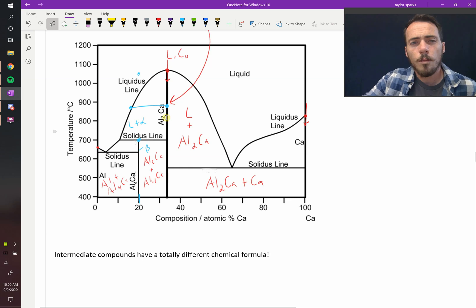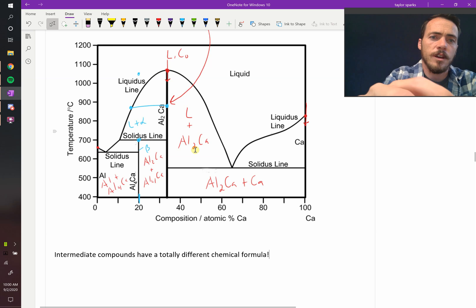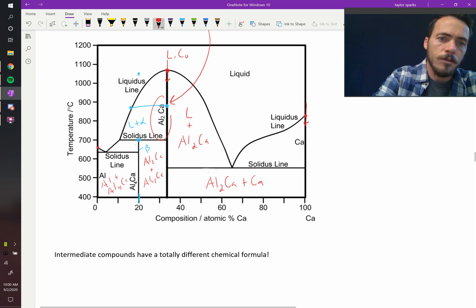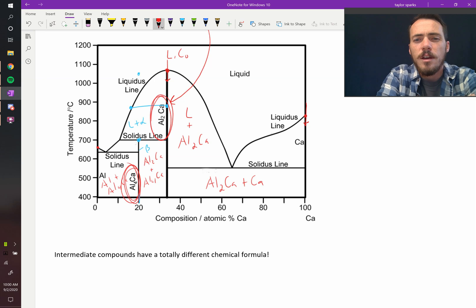Here's a question. How do you know what will be the formula of these intermediate compounds? For example, in this diagram here, this thing's labeled as Al2Ca, whereas this thing's labeled Al4Ca. How did they know what those chemical formulas were?